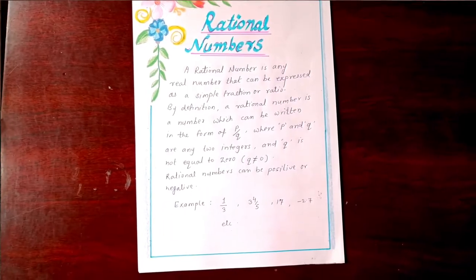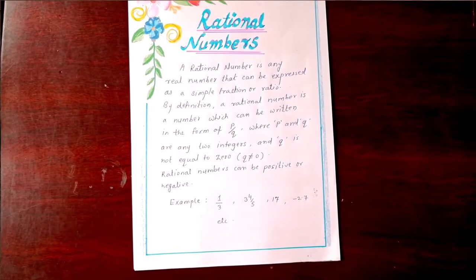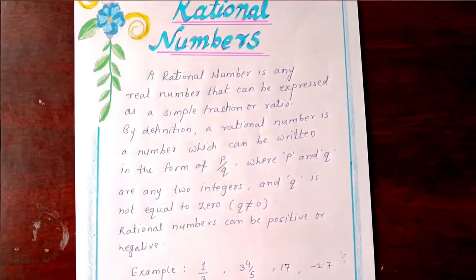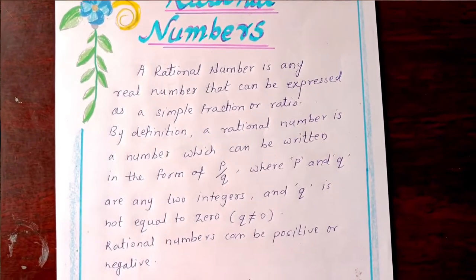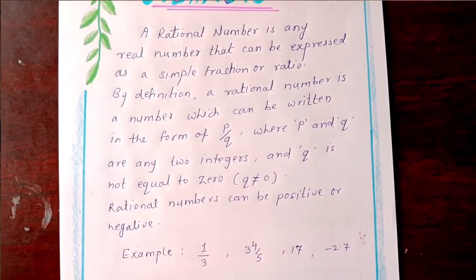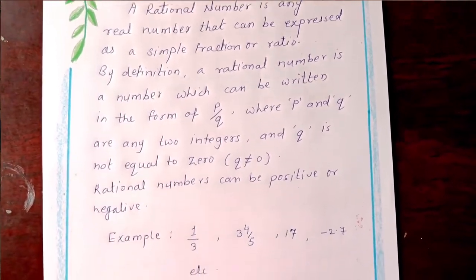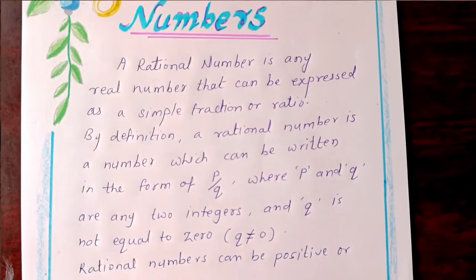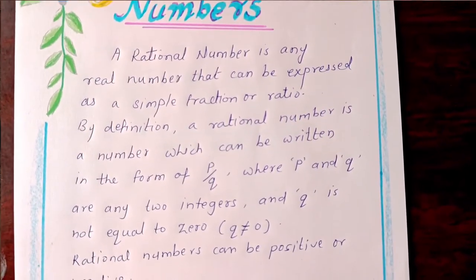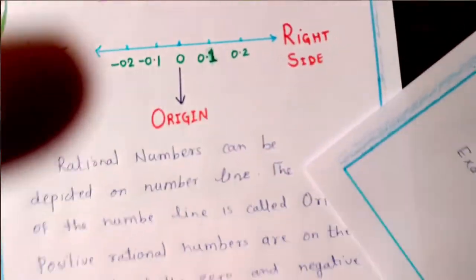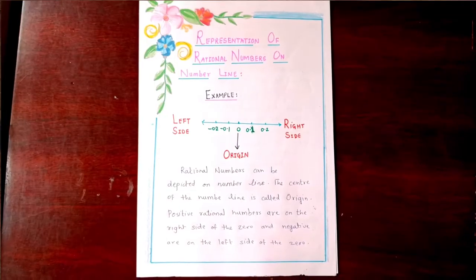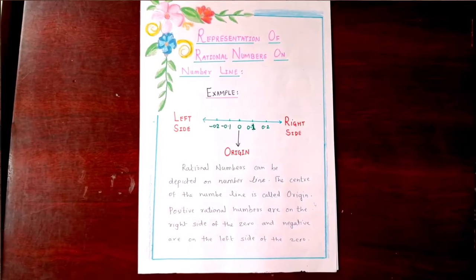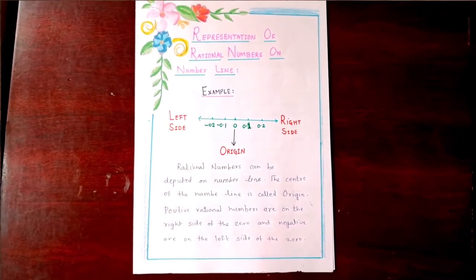The next page is rational numbers. Here is what's a rational number and its description with example. The following page is representation of rational numbers on number line.